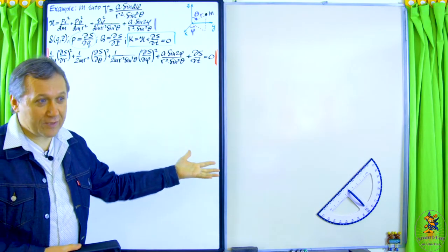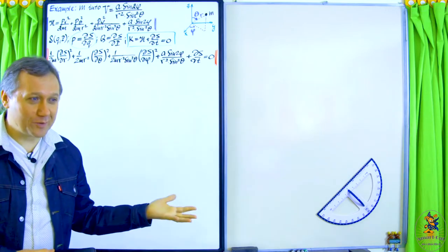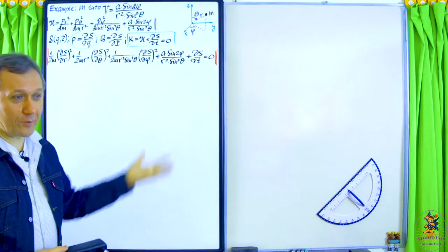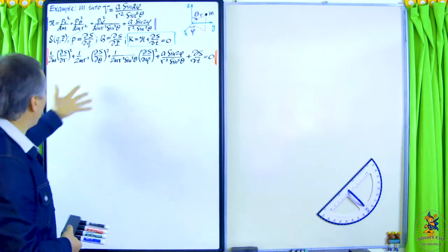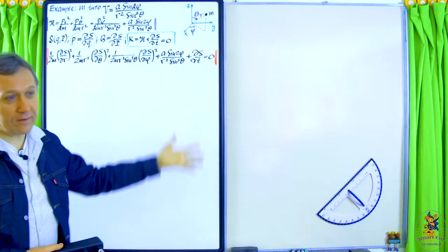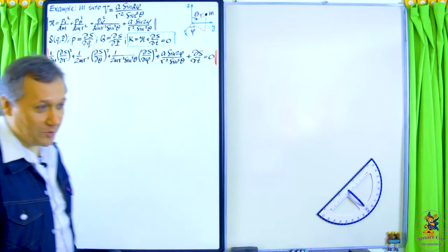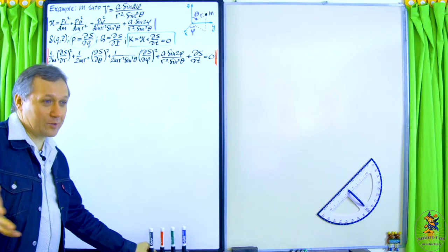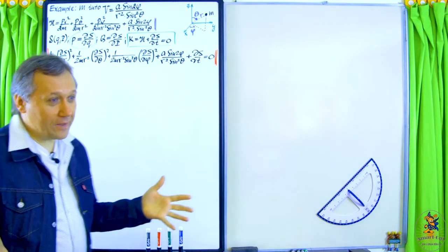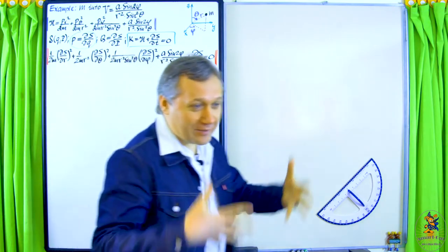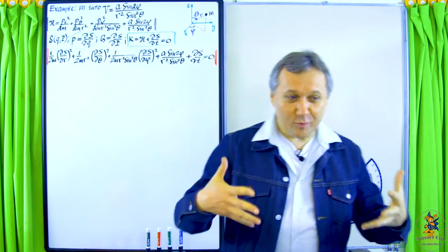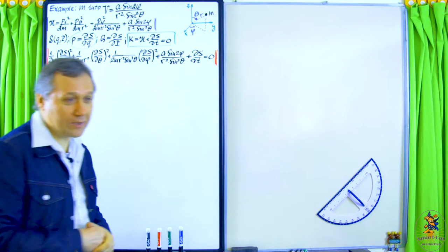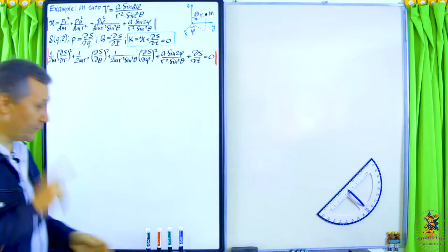First of all, you can see immediately that t is cyclic — that's the only good news. We can use the first recipe for t. But neither r, nor θ, nor φ are cyclic, so the second recipe cannot be used immediately. As I told you, we can just fill our hearts with hope and dive into the separation, hoping that it will work.